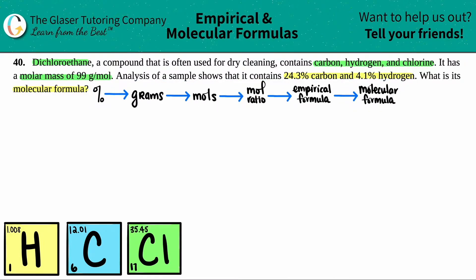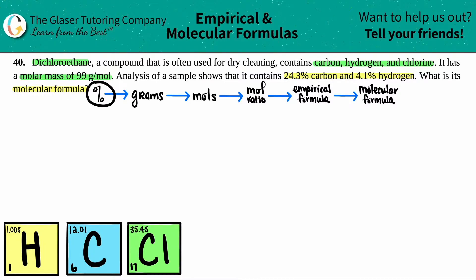From a percent composition, we can always find the empirical formula by just running through these four individual steps, and then there's one more additional step to go from an empirical formula to a molecular formula. The first thing we're going to write down is all of our percents.